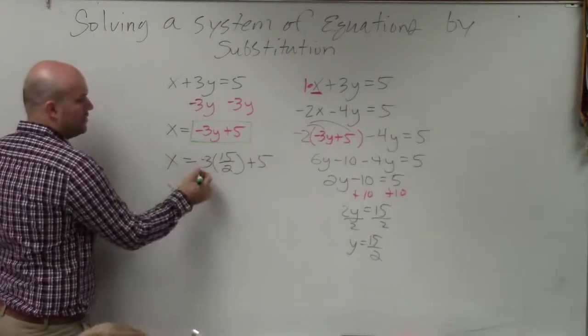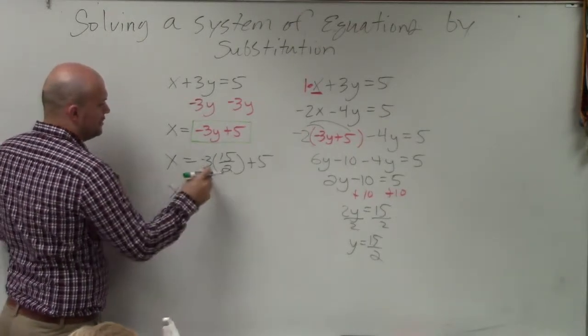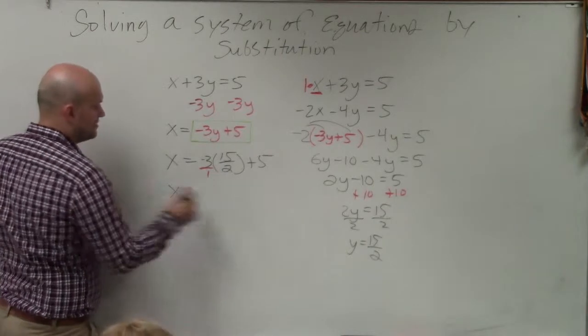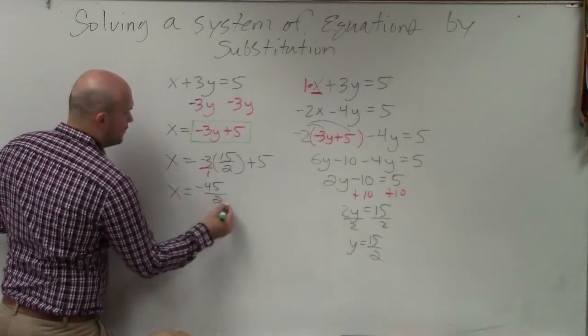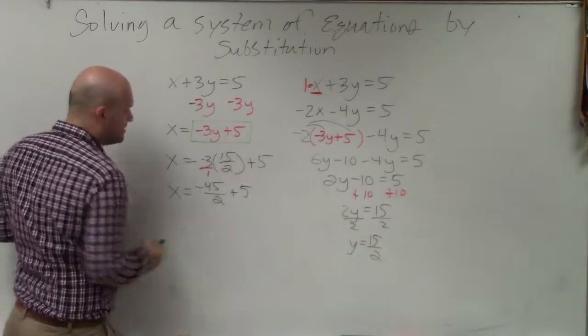I have x equals negative 3 times what y is equal to plus 5. So when you multiply a whole number times a fraction, you rewrite your whole number as a fraction. This becomes negative 45 over 2 plus 5.